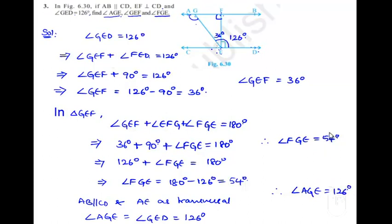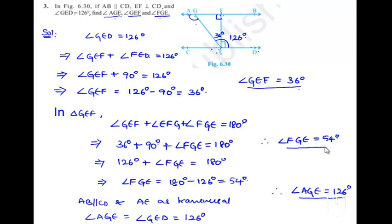Thus, we got all three unknown values: angle AGE is equal to 126 degrees, angle GEF is equal to 36 degrees, and angle FGE is equal to 54 degrees. That is the solution.